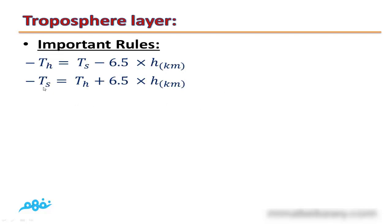If you want to find the temperature at the bottom of the mountain or at sea level, you have to find the temperature at the top of the mountain plus 6.5 times the height of the mountain in kilometers.